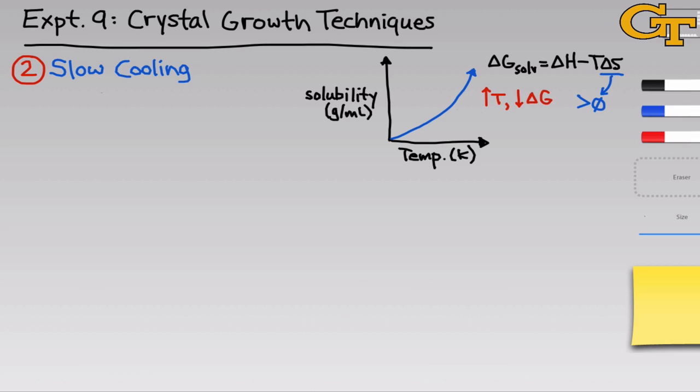The basic idea of a slow cooling experiment is to actually move down and to the left along this curve slowly, facilitating what I call micro-precipitations or crystallizations from the solution. So let's zoom in on this solubility versus temperature curve and see what we mean by this.